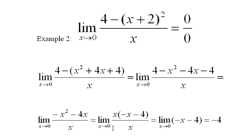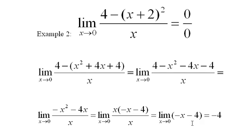And I can notice I can factor an x out of the top, cancel it with the bottom, and I end up with a pretty simple function here: negative x minus four as x heads to zero. So as x heads to zero, it's pretty clear that this is getting closer and closer to negative four.